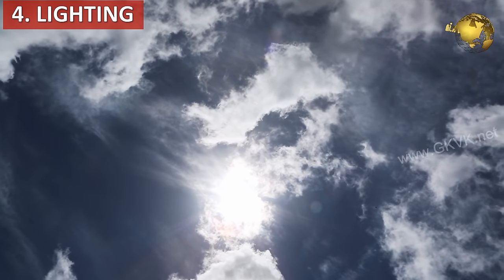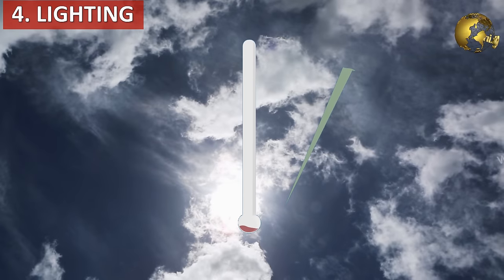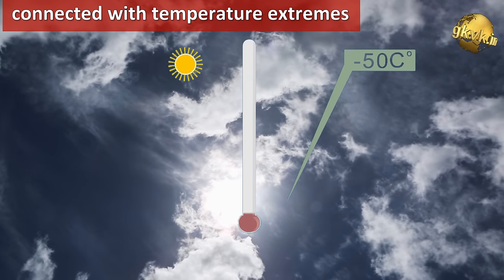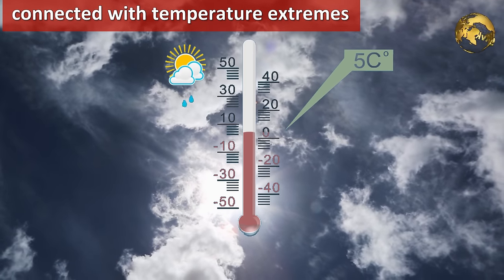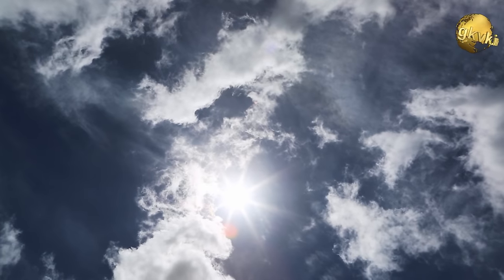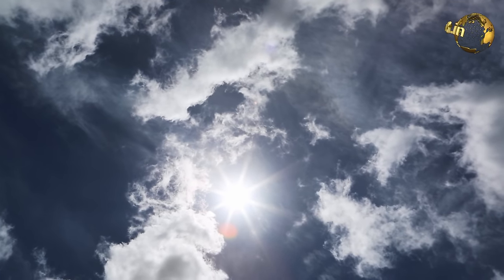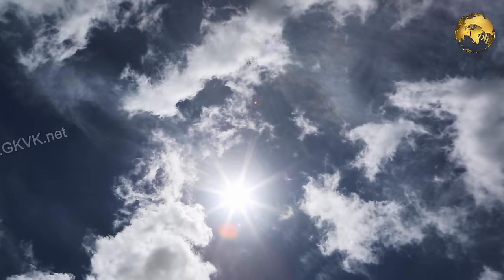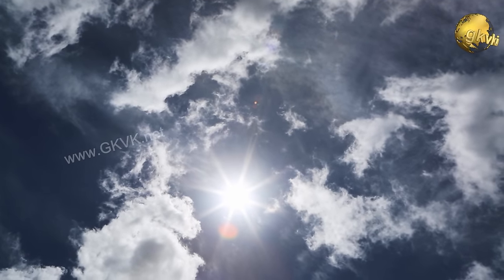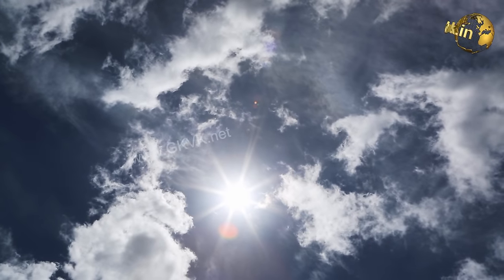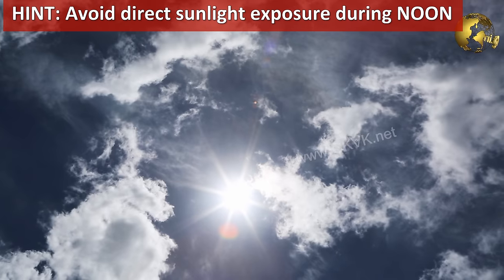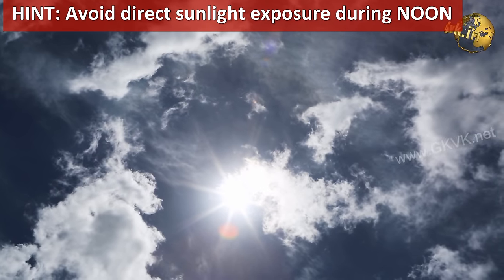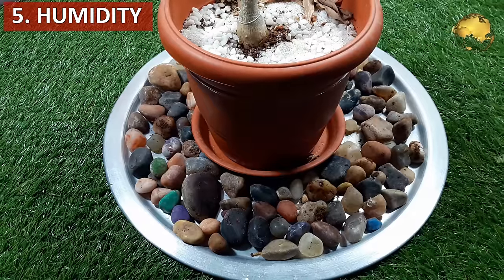The fourth reason is Wrong Lighting, which is also connected with Temperature Extremes. Light has a direct effect on how well a plant can produce food and survive. Buds often fail when high-light plants are placed in low-light settings and vice versa. Plants accustomed to low light may overheat in direct sun, causing buds to fall off. Move these plants to more appropriate lighting conditions, and avoid direct sunlight exposure during noon when the sun is at its peak.